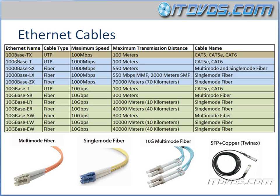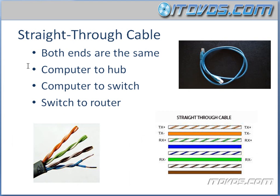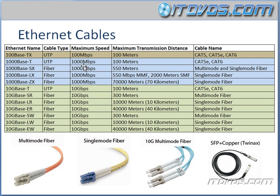The first one is 100BaseTX. This is a very common cable and it's UTP — unshielded twisted pair. It's a very common cable; if you cut it open, we've got four twisted pairs. The maximum speed we're going to get out of this cable is 100Mbps. The maximum distance the cable can be is 100 meters. The cable name we're going to use is Cat5, Cat5e, or Cat6.